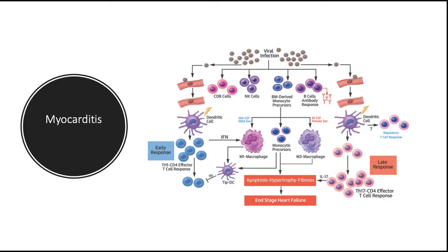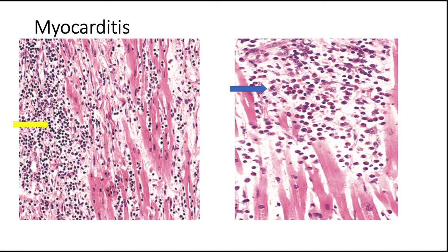Toxoplasma gondii, for which household cats are often the most common vector, can also cause myocarditis particularly in immunocompromised individuals. In acute myocarditis the heart may appear normal or dilated. In advanced stages the myocardium is typically flabby and often mottled with pale and hemorrhagic areas. Microscopically, myocarditis is characterized by edema, interstitial inflammatory lymphoid infiltrates, and myocyte injury. If the patient survives the acute phase, lesions may resolve without significant scarring or heal by progressive fibrosis.